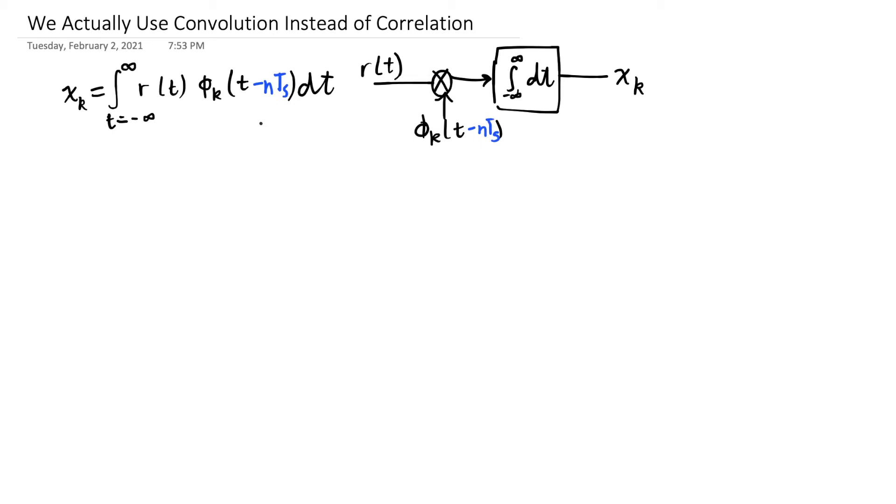So the problem is that at each time t sub s, we need to start a new integral. Potentially could go on for a very long time, and we'd need past values of r of t in order to complete this integral.